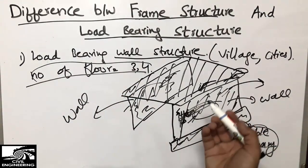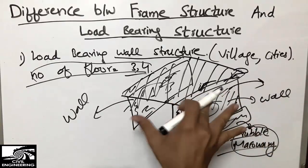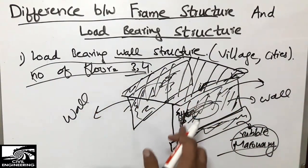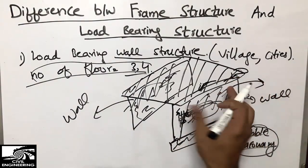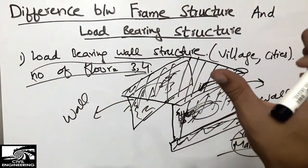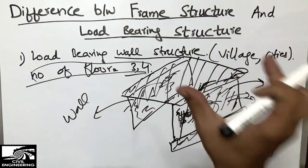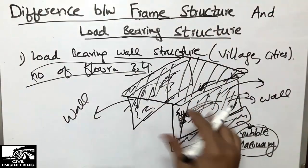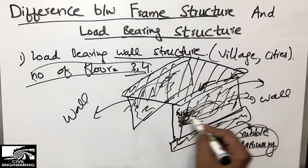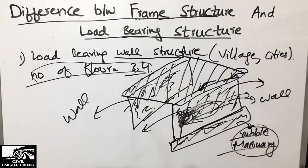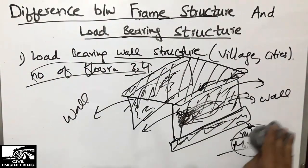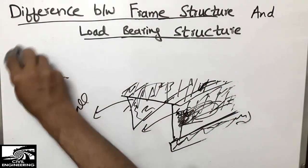The number of floors should be no more than three or four, because the structure cannot support more — the whole structure will collapse. The wall can support a second or third floor, but it cannot support a six or eight story building because it doesn't have the compressive strength compared to a column. Now I'm going to show the frame structure.